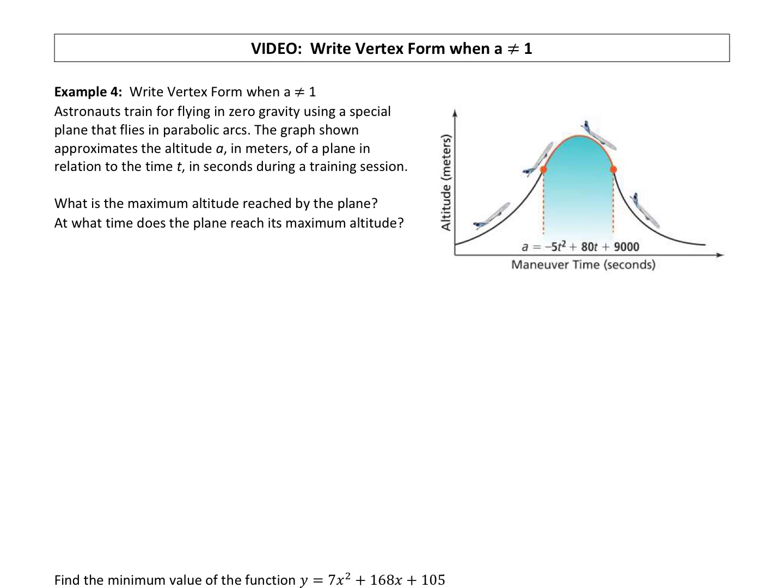All right, here's our last example for the lesson. It's going to be on writing vertex form when a does not equal 1. So we are going to complete the square like we've been doing the whole lesson, but there's an added step when a does not equal 1. We've got this embedded in a word problem, but it will be the same math, so you'll recognize what we're doing.